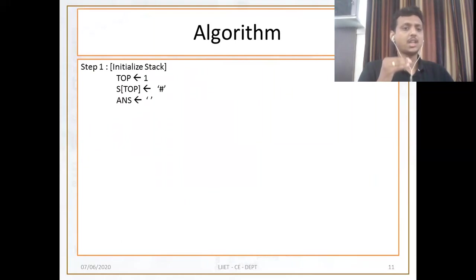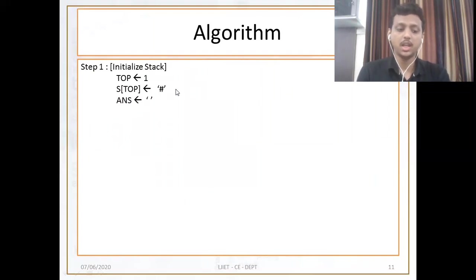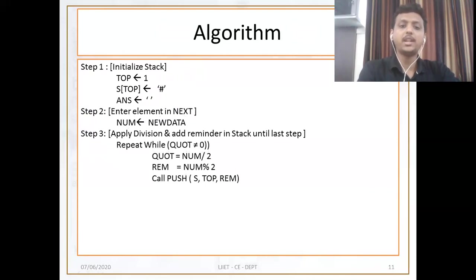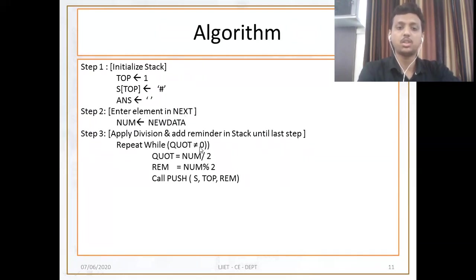Answer is my output string. As in the algorithm we start the array with 1, the top index is pointing to 1. Next, s of top is equal to hash. Step number 2: enter the element. I am just taking new data as a number. Next, apply division and add the remainder to the stack until the last step. I am taking the variable number which contains 12.